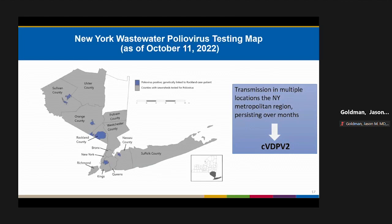This depiction of the New York wastewater polio testing map, current as of October 11th, shows the southern part of New York State. Sewer sheds shown in blue have tested positive for polio virus type 2 — genetically linked to the Rockland case patient. Given transmission in multiple locations in the New York metropolitan region persisting over months, this qualifies as a circulating vaccine-derived polio virus type 2 outbreak.